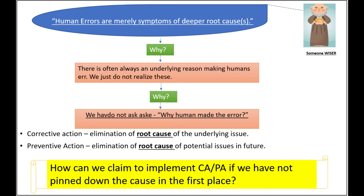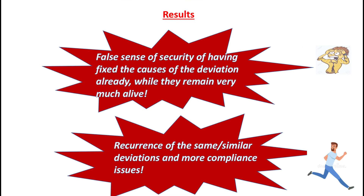In a nutshell, if the definition of corrective action is the elimination of the root cause of an underlying issue, and the definition of preventive action is the elimination of the root cause of a potential issue in the future, how can we claim to implement corrective or preventive action if we have not pinned down the cause in the first place? Because human error is just a symptom.